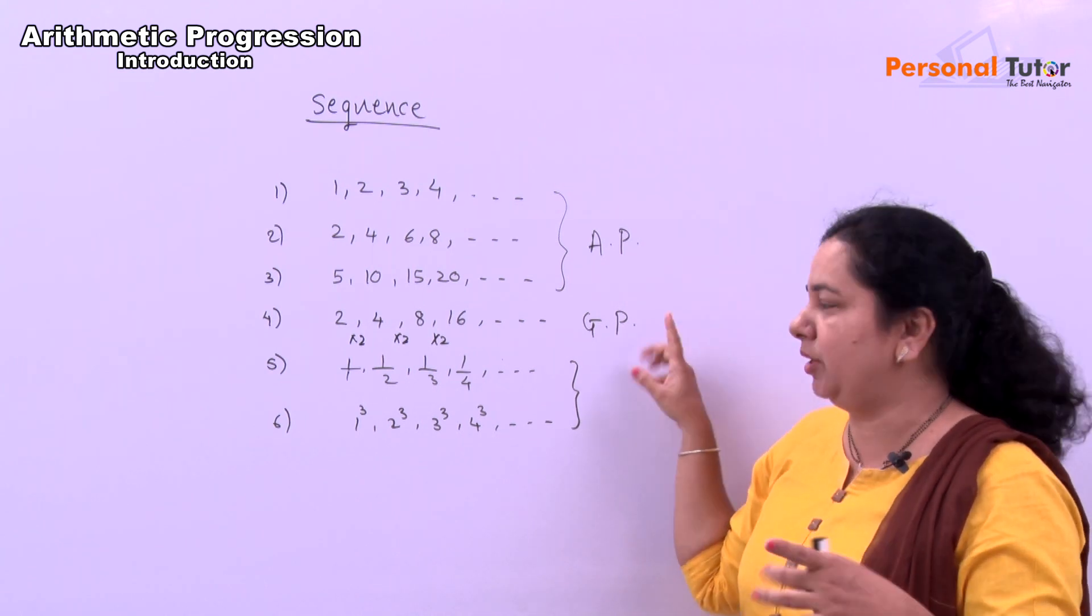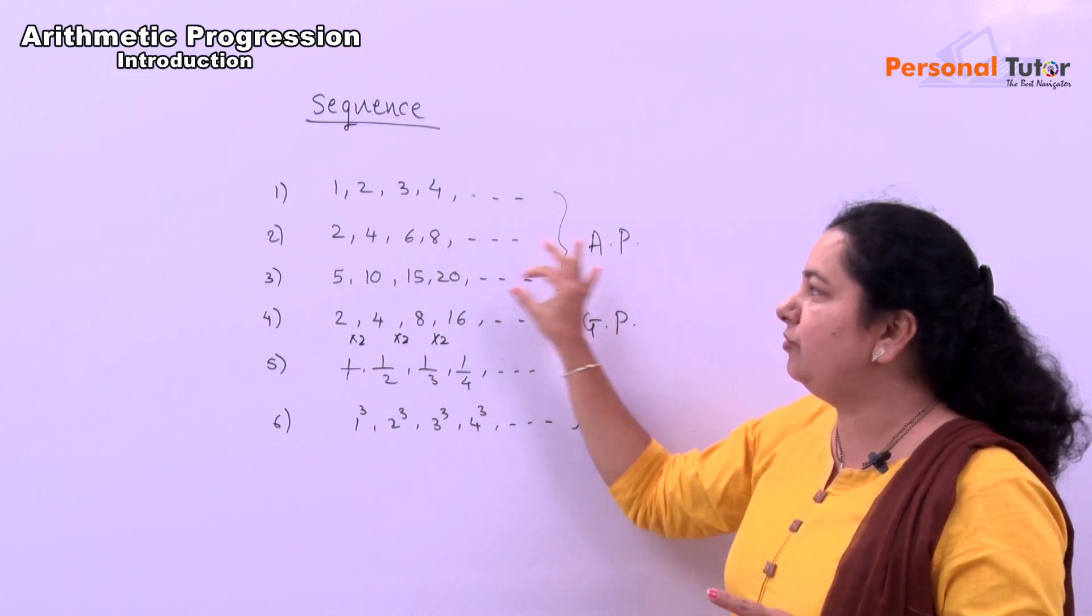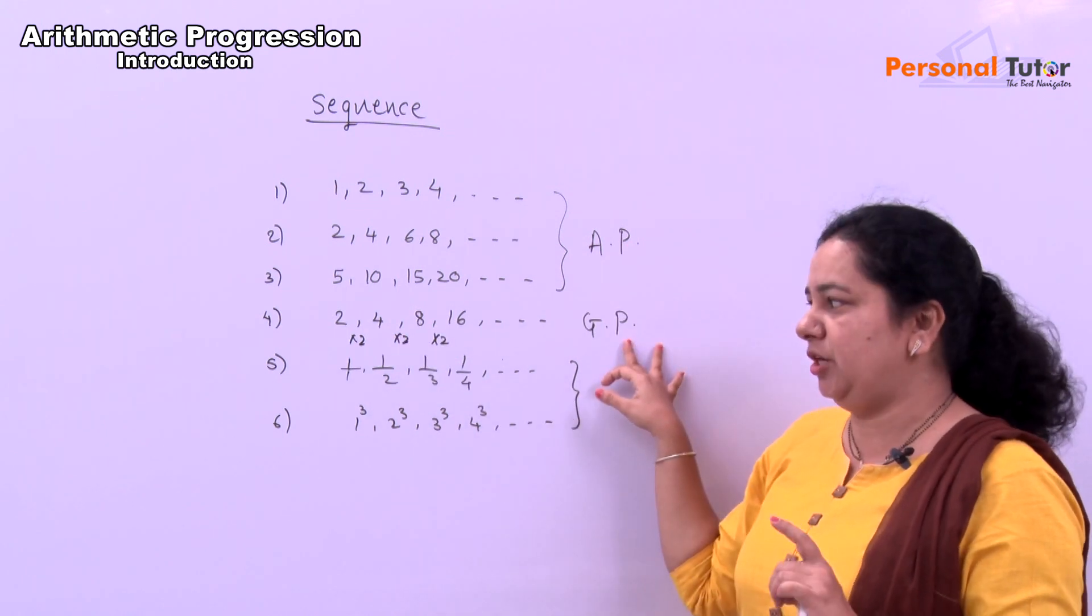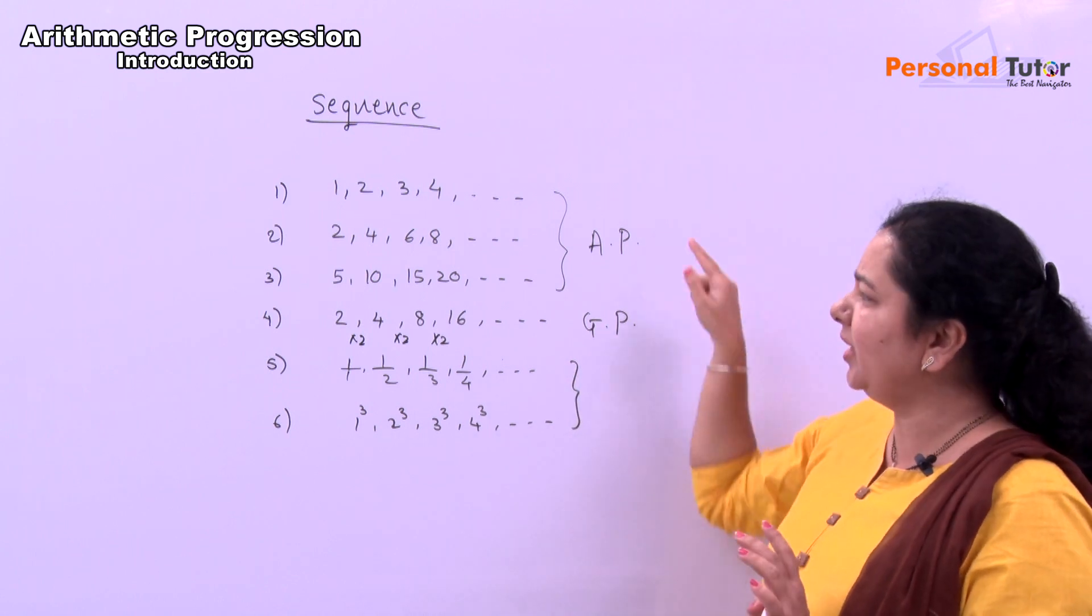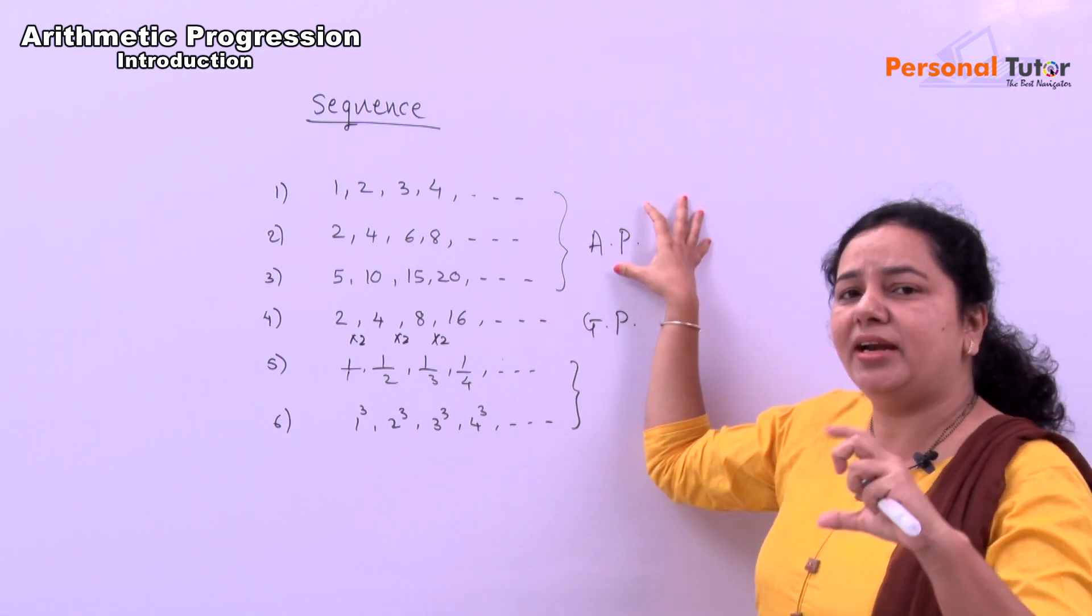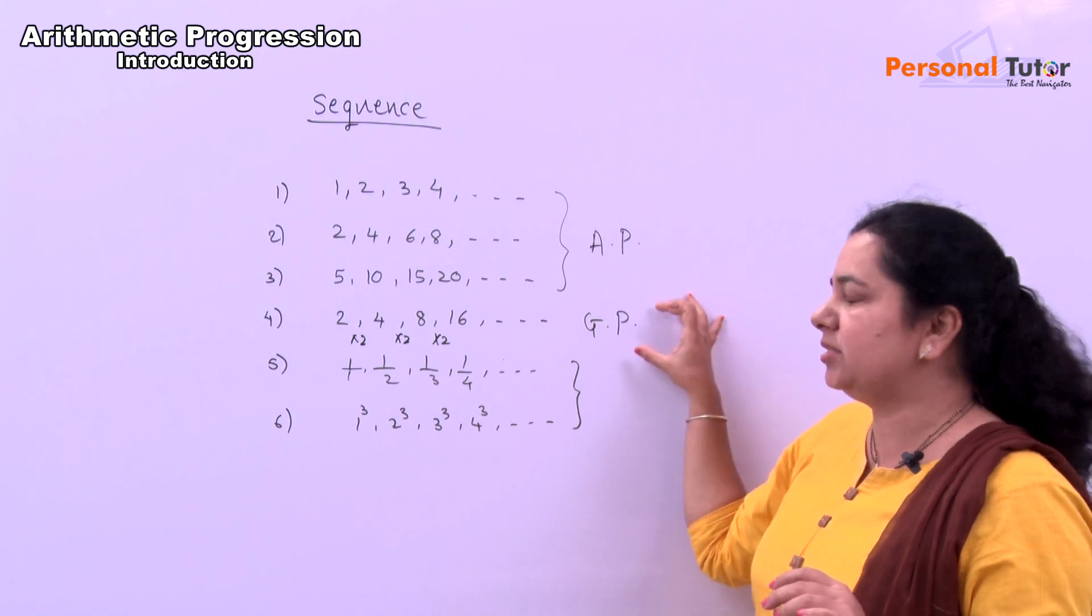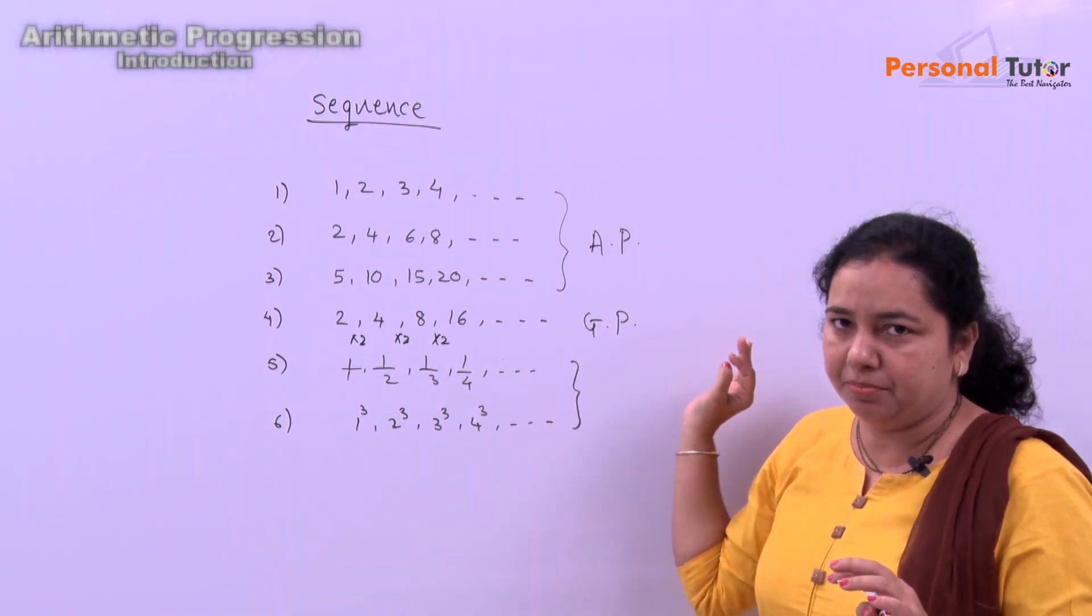This is GP means geometric progression. First 3 examples are for AP. Fourth one is for GP. And these 2 are neither AP nor GP. In 10 standard syllabus, it is only related with arithmetic progression. In 11 standard, you are studying geometric progression and remaining part.